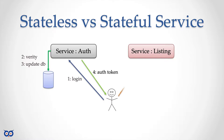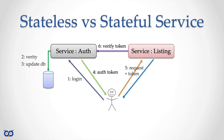The auth service sends back a token to the user representing their login session. The user can then connect to the listing service with that token. The listing service doesn't have access to the token database, so it contacts the auth service to verify the token. The auth service checks its database, confirms the token is valid, and the listing service can then fulfill the user's request.